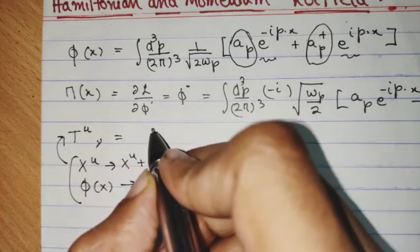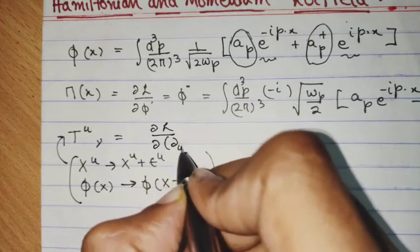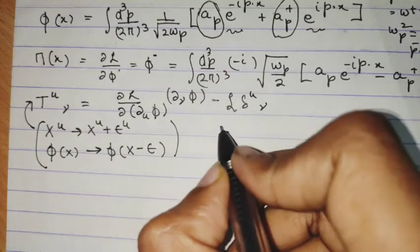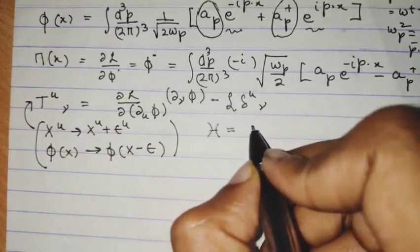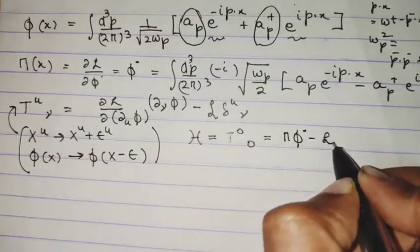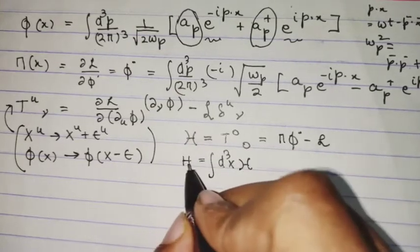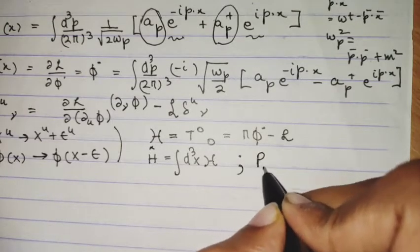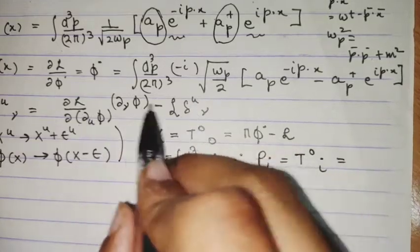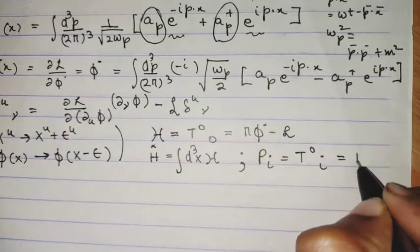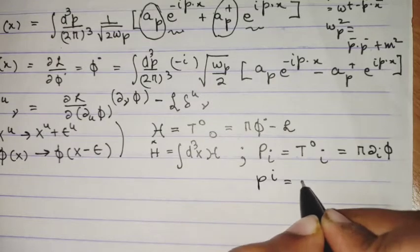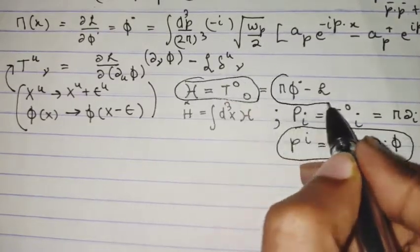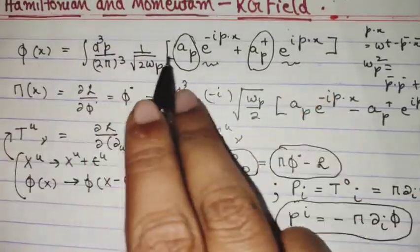The form of this current was: ∂^μφ · ∂^νφ minus L times δ^μν. This was the energy-momentum tensor. The Hamiltonian density is simply T^{00}, which is π φ̇ − L. The conserved charge H is actually ∫d³x H, so the conserved charge is the Hamiltonian operator we are interested in. Similarly, the momentum P^i is actually T^{0i}, where i goes from 1 to 3, and that gives us π times ∂^i φ, or P^i = −π ∂^i φ. So now we know the form of our π operators and our Hamiltonian operator.